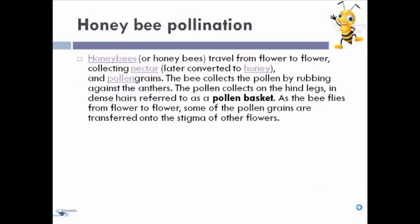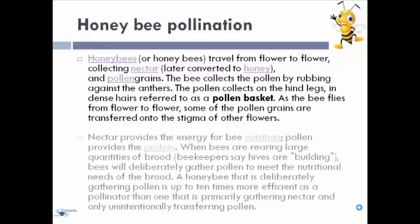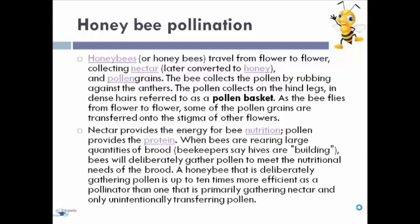Honeybees travel from flower to flower, collecting nectar and pollen grains. The bee collects pollen by rubbing against the anthers, and the pollen collects on the hind legs in an indent referred to as a pollen basket. As the bee flies from flower to flower, some pollen grains are transferred onto the stigma of another flower. Nectar provides the energy for bee nutrition. Pollen provides the protein. When bees are rearing large quantities of brood, they will deliberately gather pollen to meet nutritional needs.